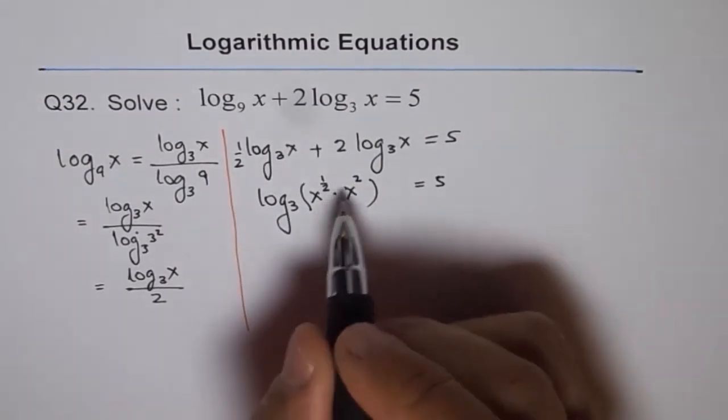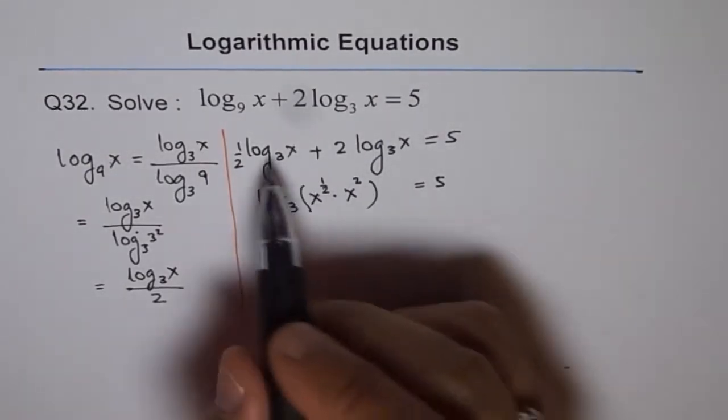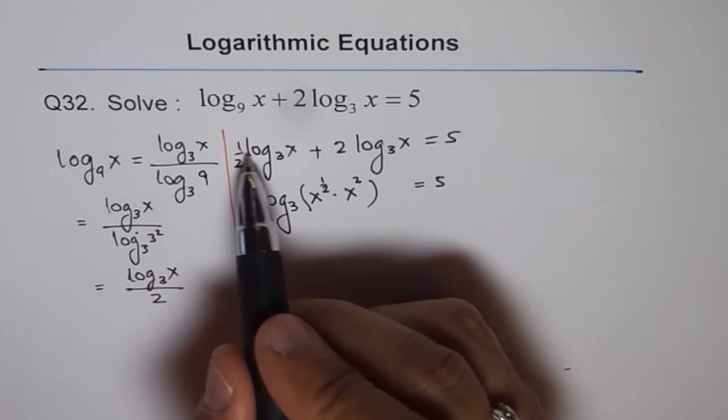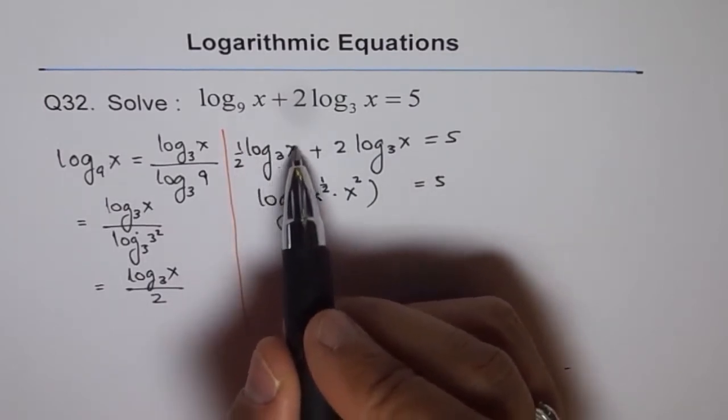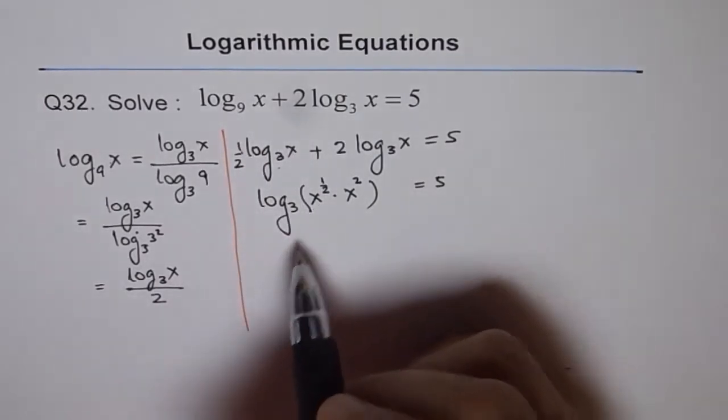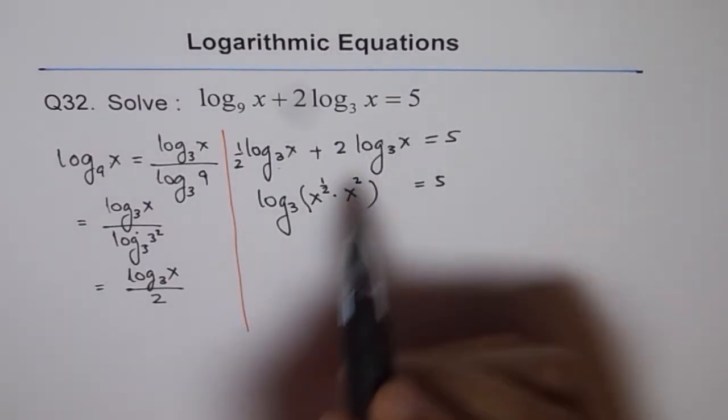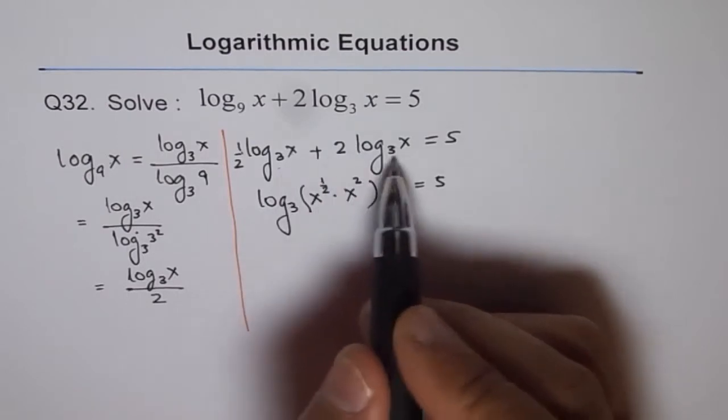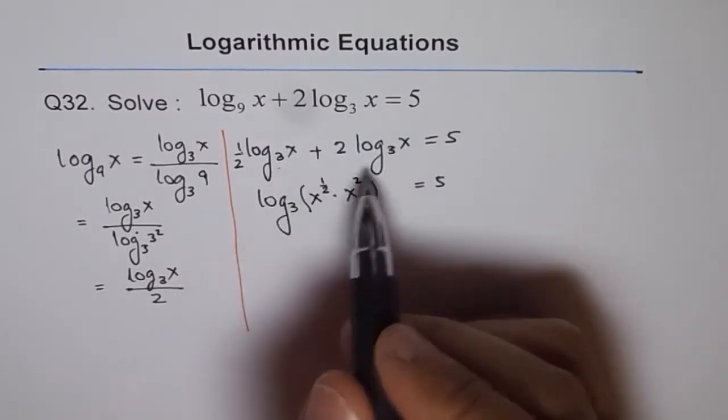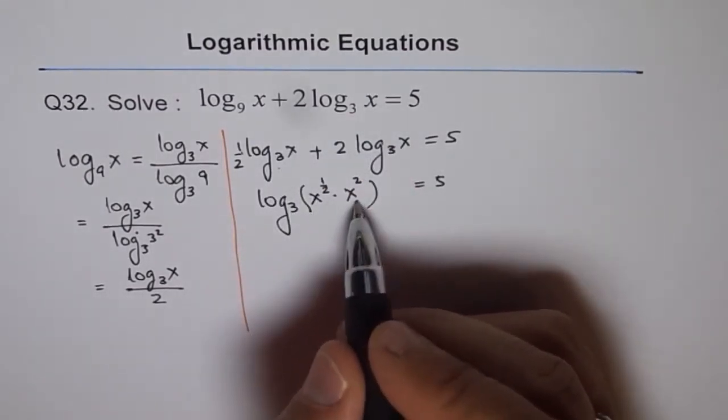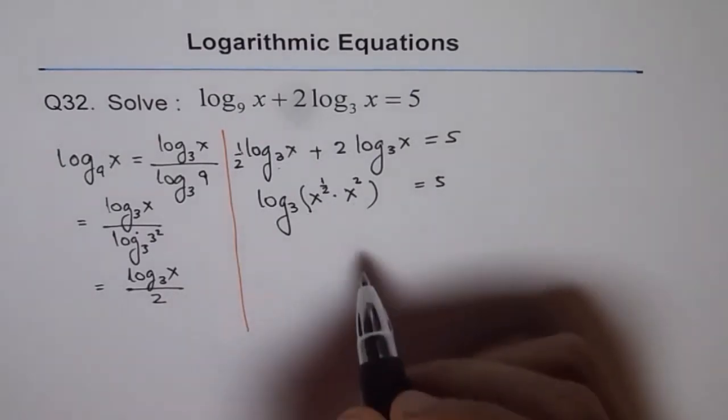Using the power rule, the first term becomes log base 3 of x to the power of one-half, and the second becomes log base 3 of x squared. When we have plus between terms with the same base, we use the product rule and they get multiplied.